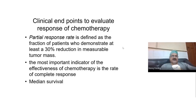As per RECIST, a partial response is defined as a reduction of 30% in the size of the measurable tumor mass. So if you have a 10 cm tumor, you give chemotherapy, and the tumor becomes 7 cm, you call it a partial response.